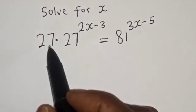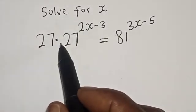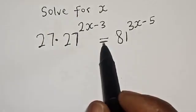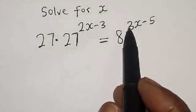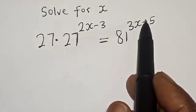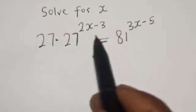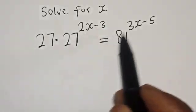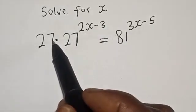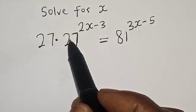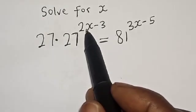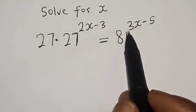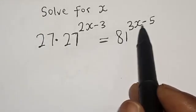Solve for s. 27 multiplied by 27 raised to power 2x minus 3 is equal to 81 raised to power 3x minus 5. Hi everyone, welcome to my class. In this class, we want to find the value of s from this given equation: 27 multiplied by 27 raised to power 2x minus 3 is equal to 81 raised to power 3x minus 5.